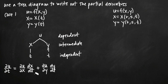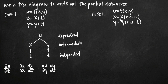That's how you write out a Case 1 partial derivative — when you have one independent variable and one dependent variable. Now, looking at the second example, this is going to be a Case 2 type function. We have u in terms of x and y, and then x and y each in terms of three variables. When you have one dependent variable in terms of multiple — in this case three — independent variables, that's a Case 2 type function.